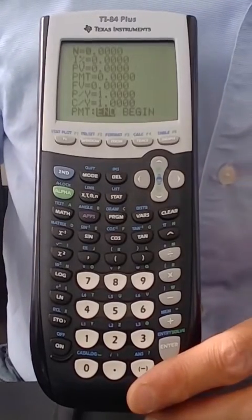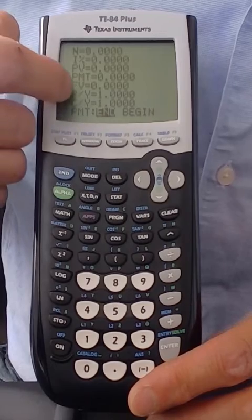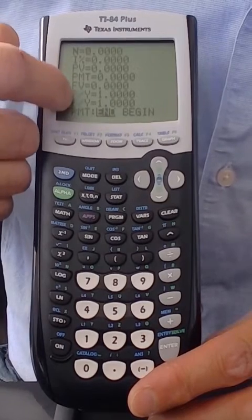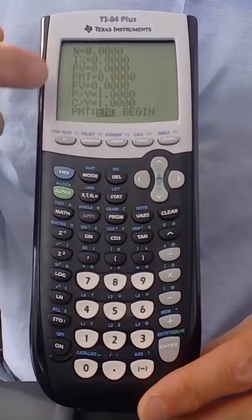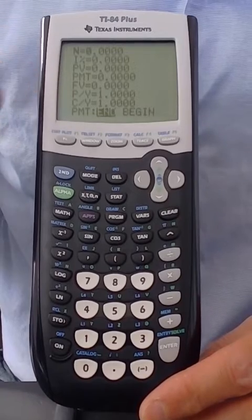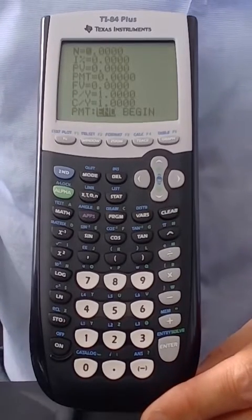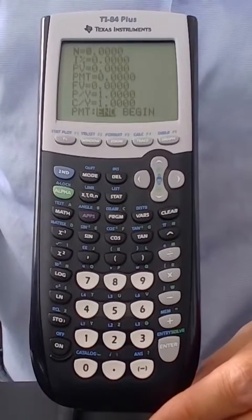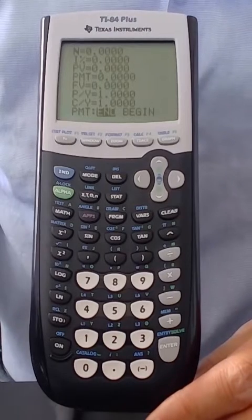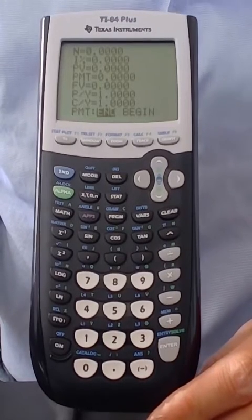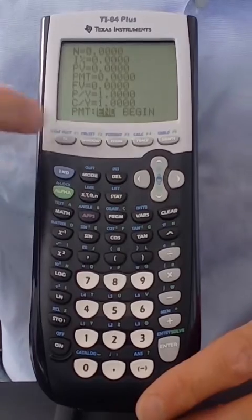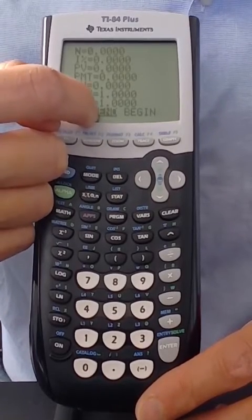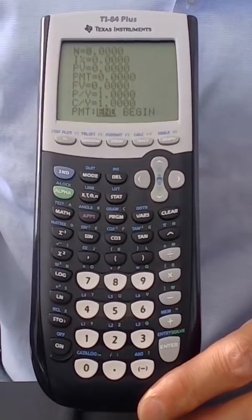A few things to make sure about before we enter values is that make sure that these bottom three terms are like what you see. So the periods per year, which is P/Y, compounding periods per year, which is C/Y, should both equal one for every one of your problems. And very importantly, you have the end highlighted there, not begin.